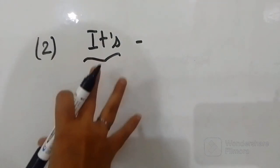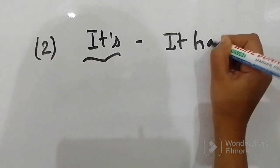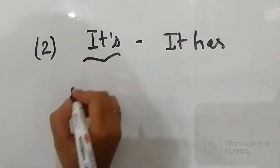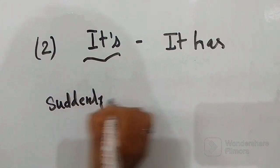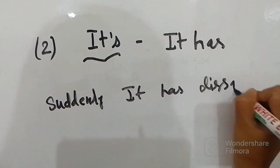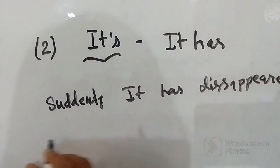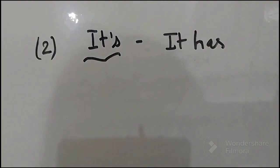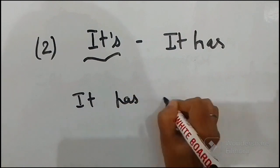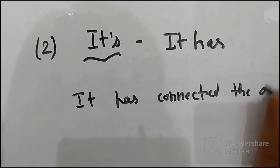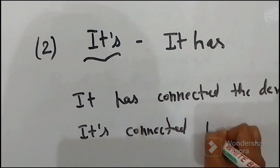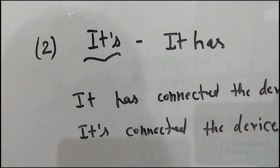'It's' with apostrophe is also a contracted form of 'it has'. Whenever we want to say 'it has', we directly say 'it's'. For example, 'Suddenly it has disappeared' — we will say 'Suddenly it's disappeared.' Another example: 'It has connected the device' — we can say 'It's connected the device.' So this is how we use 'it's' with an apostrophe: one for 'it is' and another for 'it has'.